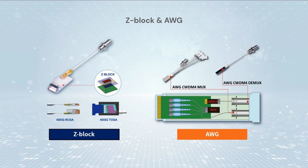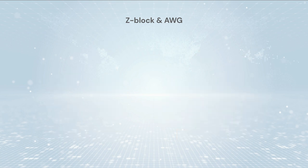Both AWG and Z-block are optical components widely used in high-speed optical modules. AWG technology has the lowest process difficulty in cost and is widely used in receiver ends of traditional optical modules. AWG and TFF both have advantages in transmitter ends of optical modules. The comparison shows that Z-block technology has the advantages of low loss and good channel quality, supporting long distance transmission.